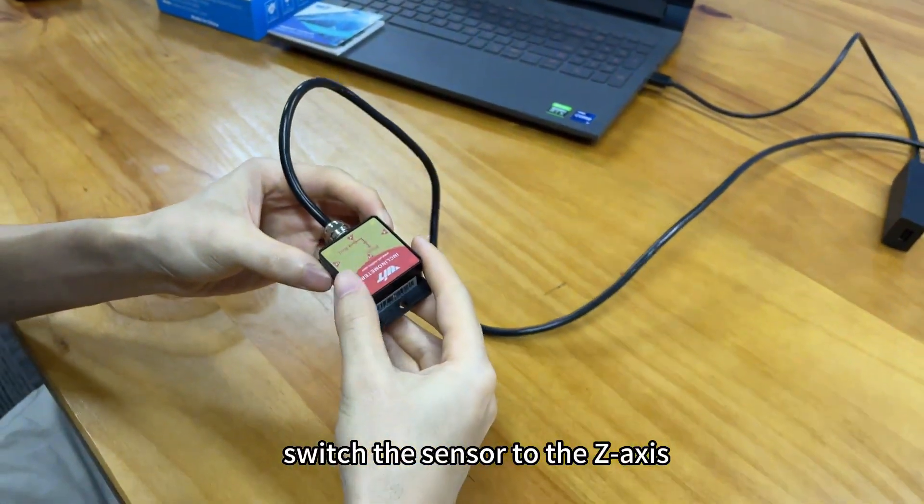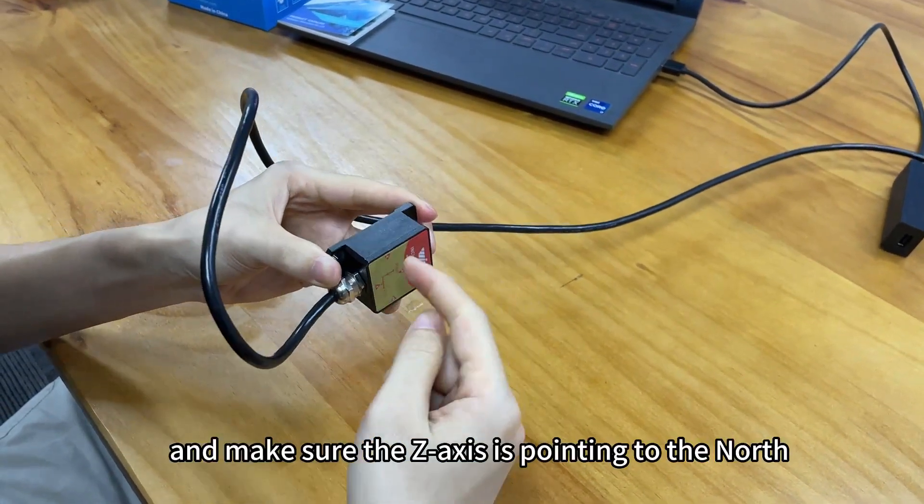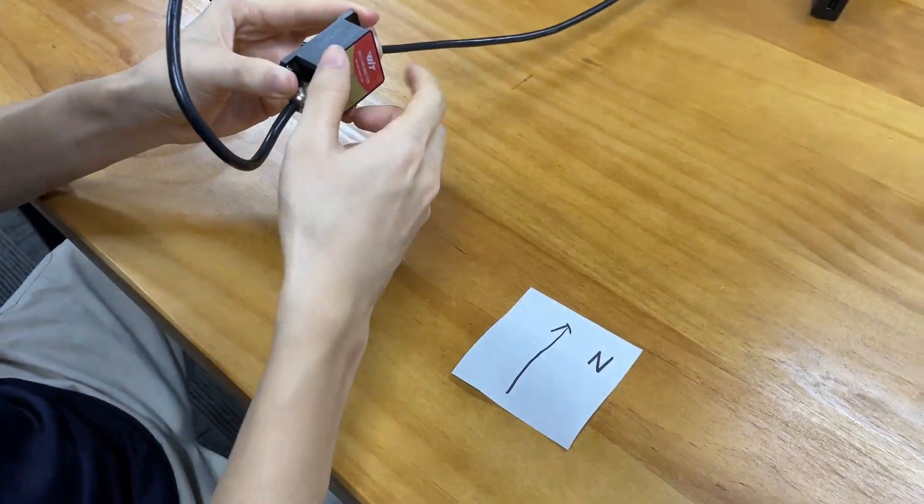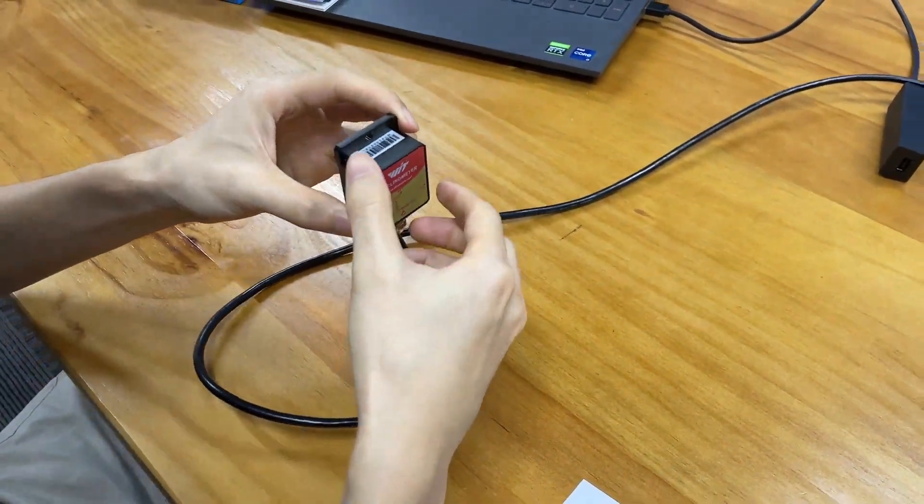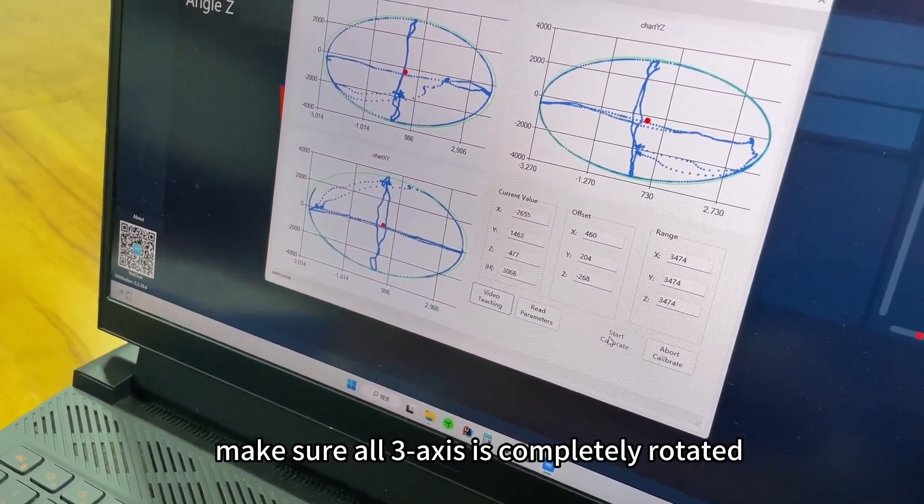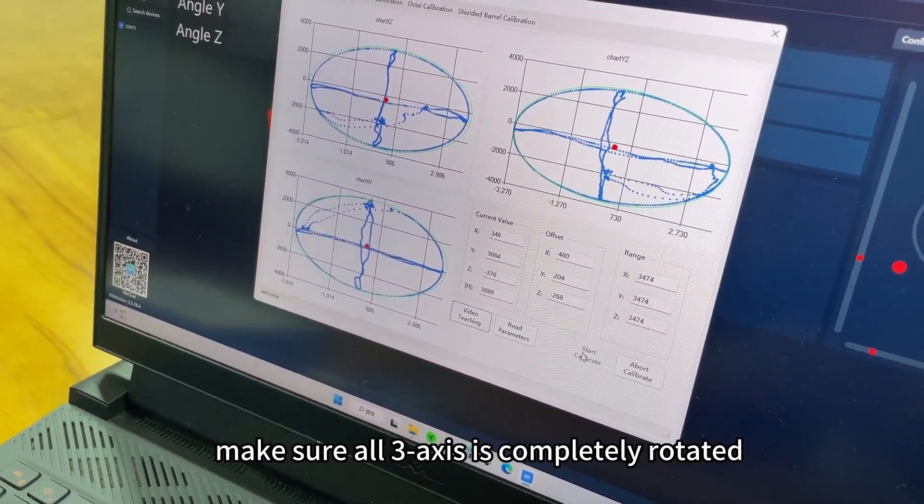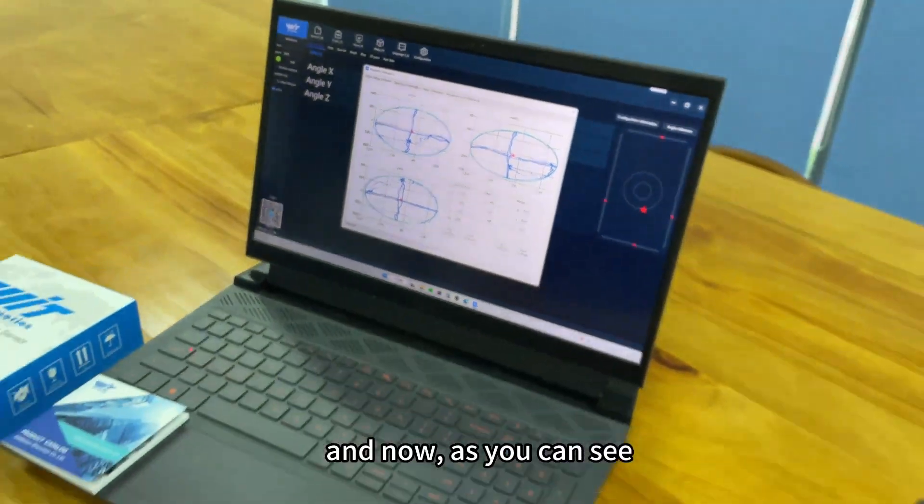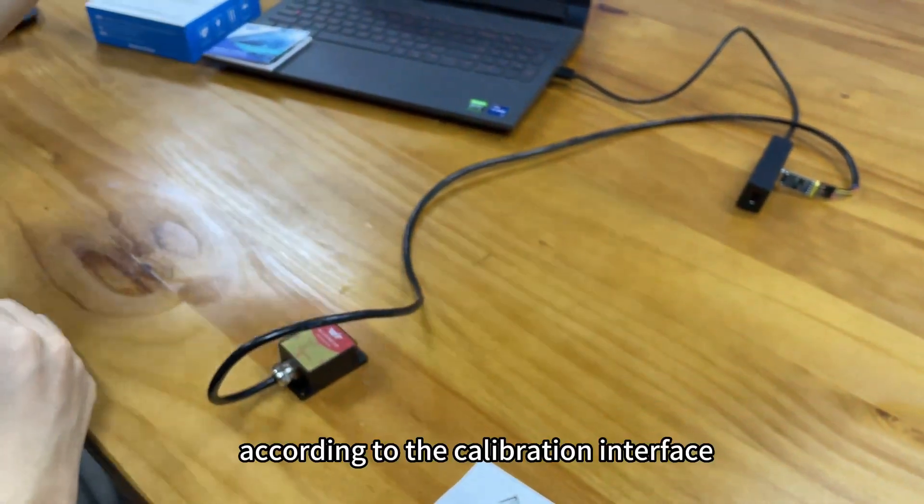We will switch the sensor to the Z-axis and make sure the Z-axis is pointing to the north. Okay, slowly rotate, very slowly, and make sure the three axes are completely rotated. Now, as you can see according to the calibration interface...